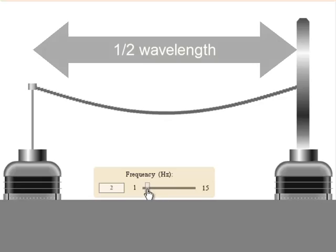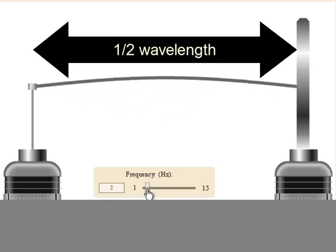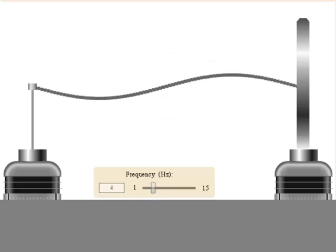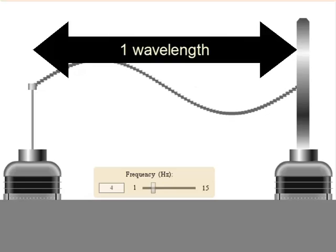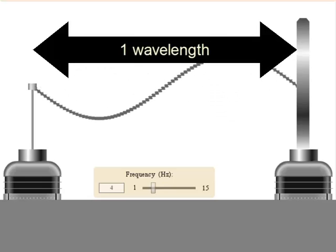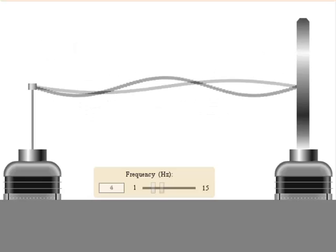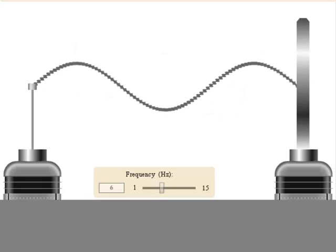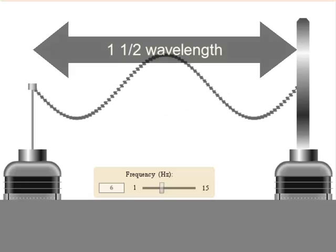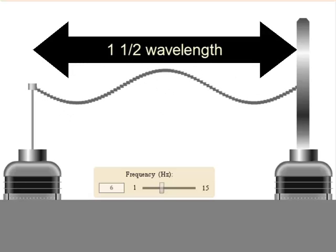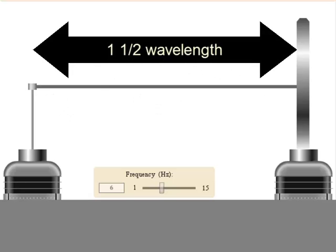This standing wave has a one-half wavelength. If you shake with twice the frequency, you produce a one-wavelength standing wave. If you shake it at triple the frequency, you produce a one-and-a-half wavelength standing wave.